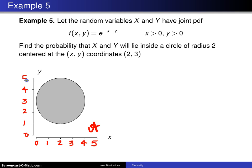The question asks for the probability that x and y will lie inside a circle of radius 2 centered at the x, y coordinates 2, 3.